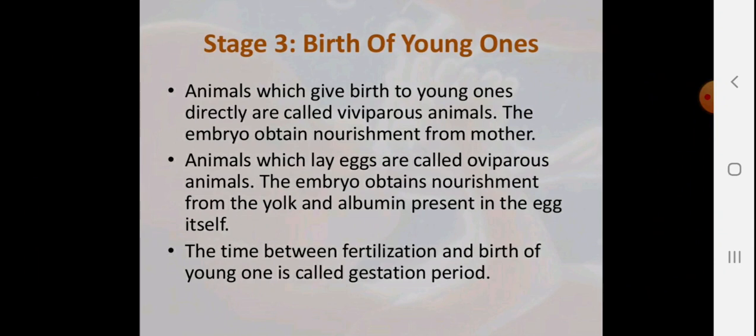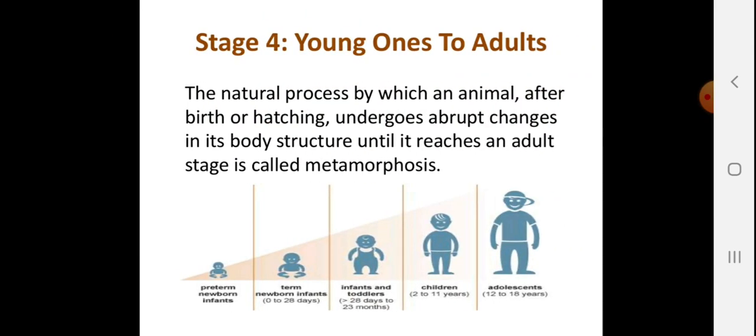Stage 3 is the birth of young ones. Animals that give birth to young ones directly are called viviparous animals; the embryo receives nourishment from the mother's body through the umbilical cord. Animals that lay eggs are called oviparous animals; the embryo receives nourishment from the yolk and albumin in the egg. The time between fertilization and birth is called the gestational period.